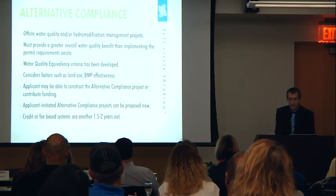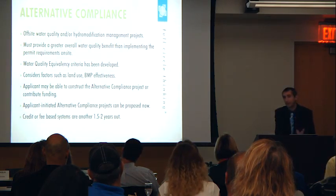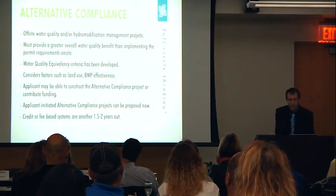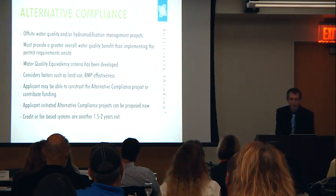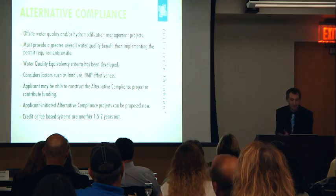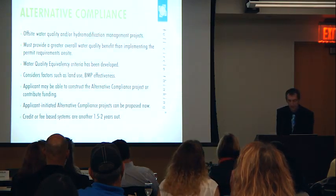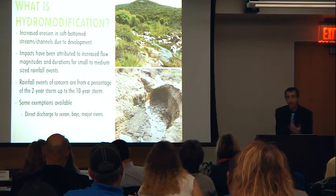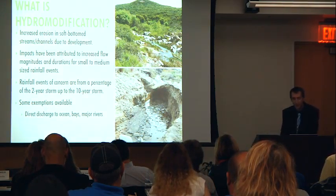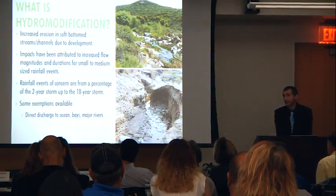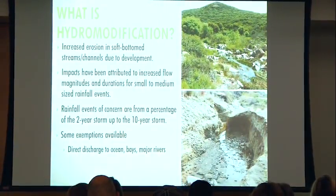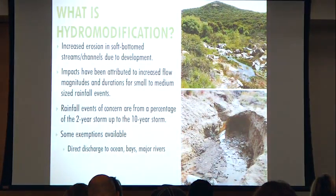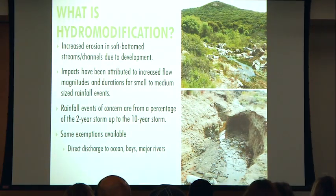Eventually there will be two options for alternative compliance: the project constructs it themselves, or contributes funding to a regional alternative compliance project. The applicant-initiated alternative compliance can be proposed now under the BMP Design Manual, but the credit and fee-based systems are still under development — estimated another one and a half to two years out. That's expected to be an attractive option for many developers, though applicant-proposed projects haven't come through yet, and there are still some hurdles around maintenance.